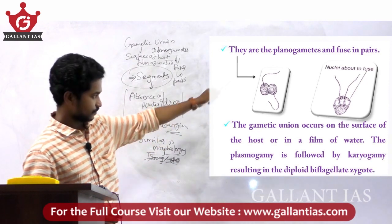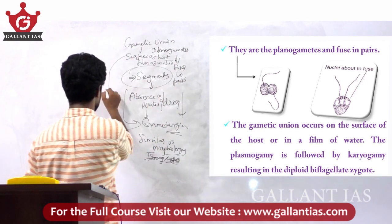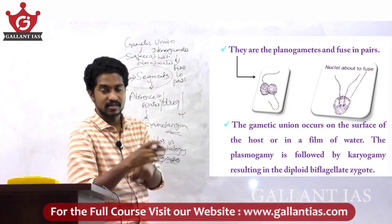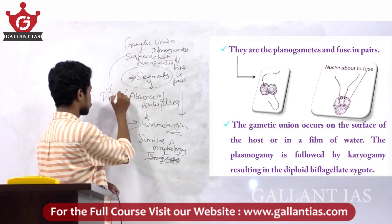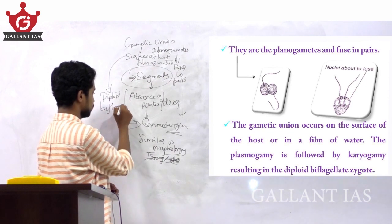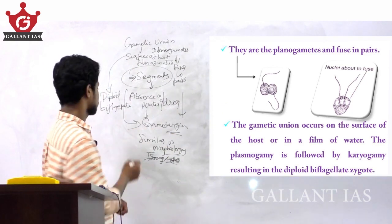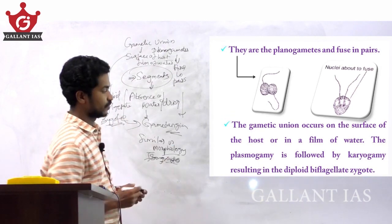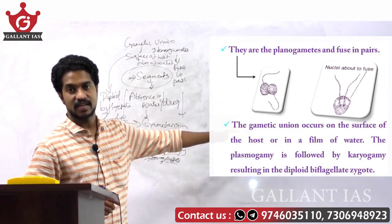The fusion takes place: plasmogamy is followed by karyogamy, resulting in the formation of a diploid biflagellate zygote. On the figure you can see the nuclei about to fuse, resulting in the formation of the diploid biflagellate zygote.